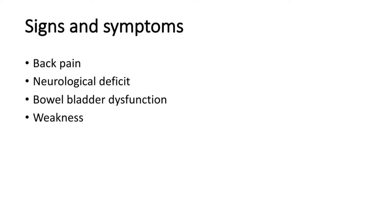The signs and symptoms of spinal cord compression: first is back pain — initially the patient will experience pain in the back, then it will lead to neurological deficit, that is numbness and tingling of the hands and fingers or legs. If the end part of the spinal cord is compressed, this can lead to cauda equina syndrome, causing bowel and bladder dysfunction. Ultimately the patient will feel weak.